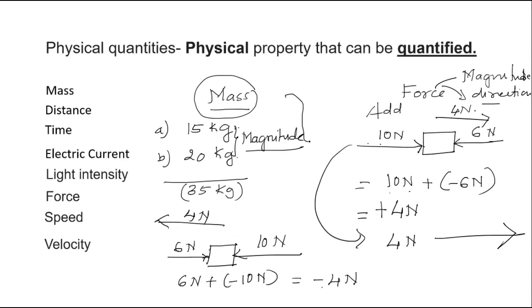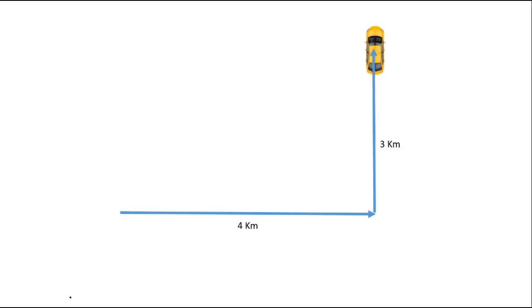When you add only magnitudes, the answer will be different, but we cannot add only magnitude in the case of force because force is a quantity which has magnitude as well as direction. There are some physical quantities which have only magnitude, and there are some which have magnitude as well as direction. For example, consider a car moving in one direction for a distance of 4 km and in another direction for 3 km, with the total time taken being 0.2 hours.